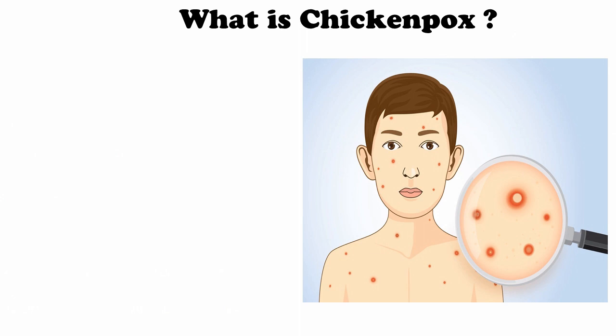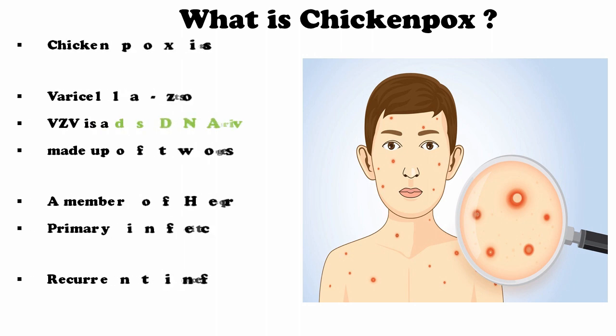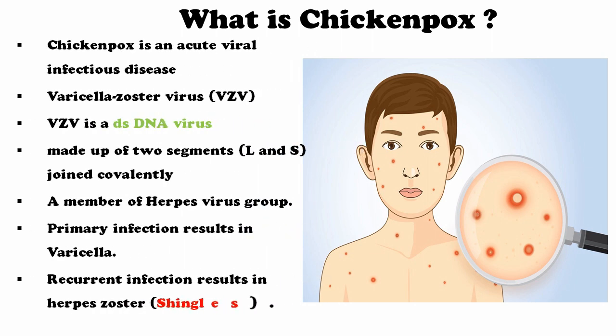Chickenpox is diagnosed or manifested by vesicle formation around the skin all over your body. Chickenpox is an acute viral infection caused by the virus named Varicella Zoster. The Varicella Zoster virus is a double-stranded DNA virus made up of two segments — large and small segments. A member of the Herpes virus group, primary infection results in varicella. If you are infected by the virus for the first time, that is primary infection, which is caused by the Varicella Zoster virus.